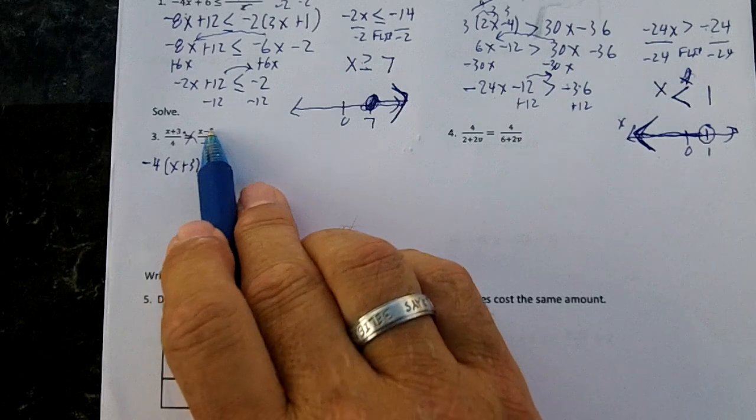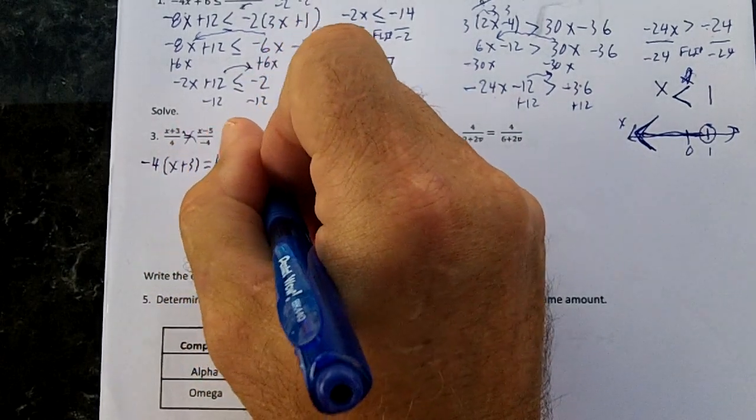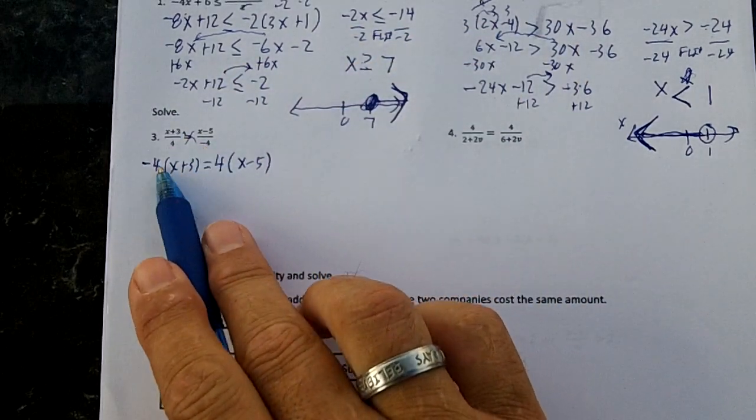Then I'm going to take my x minus 5 and multiply it by this 4. So I'm going to have 4 times x minus 5. So I did x plus 3 times this number, negative 4.